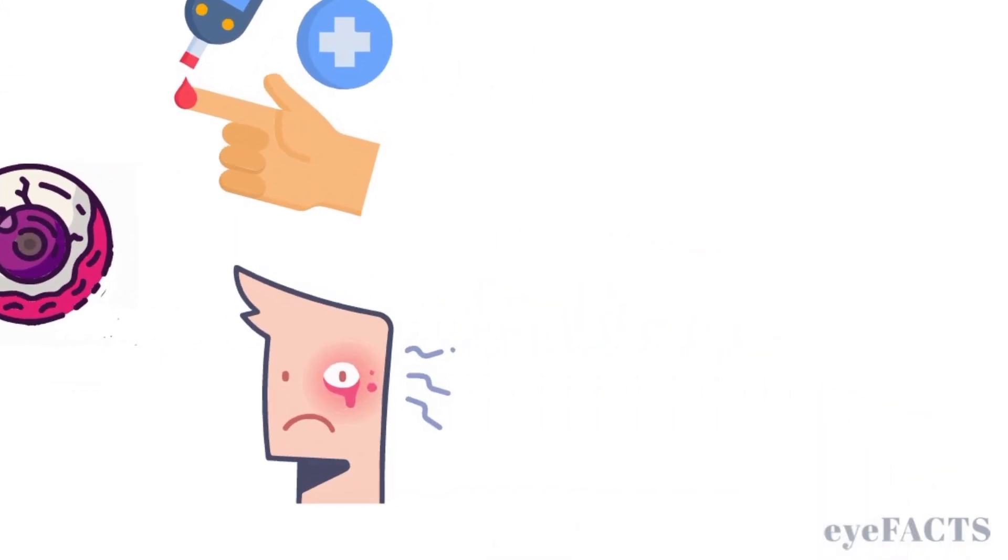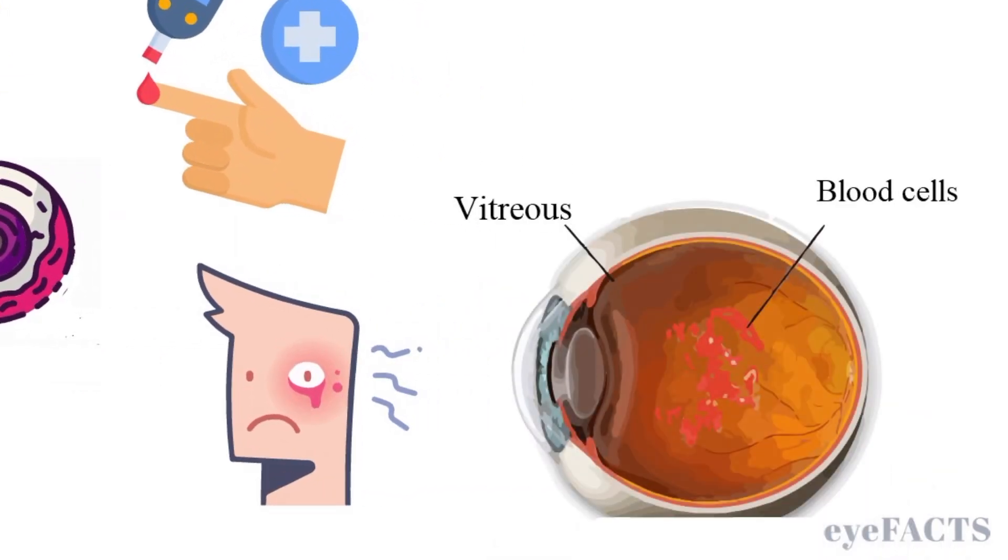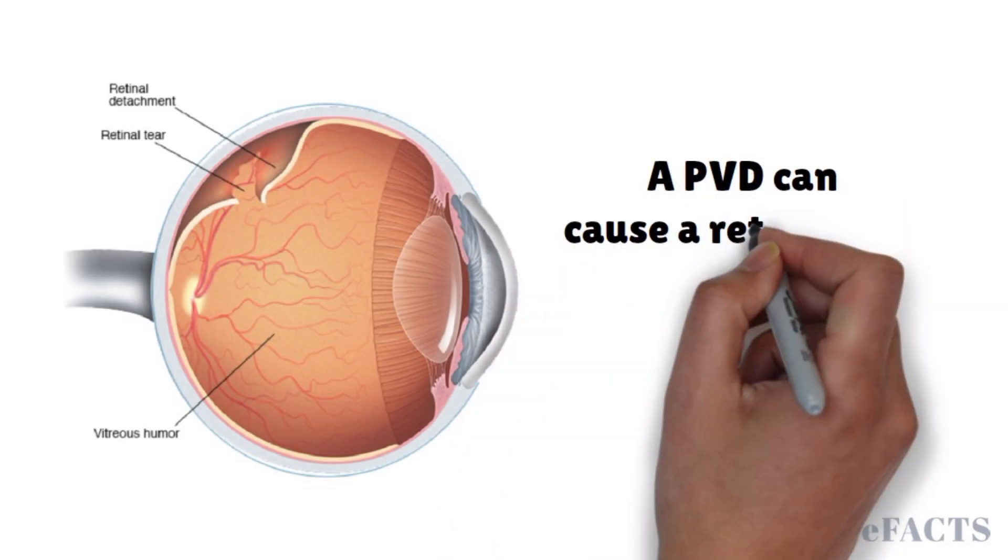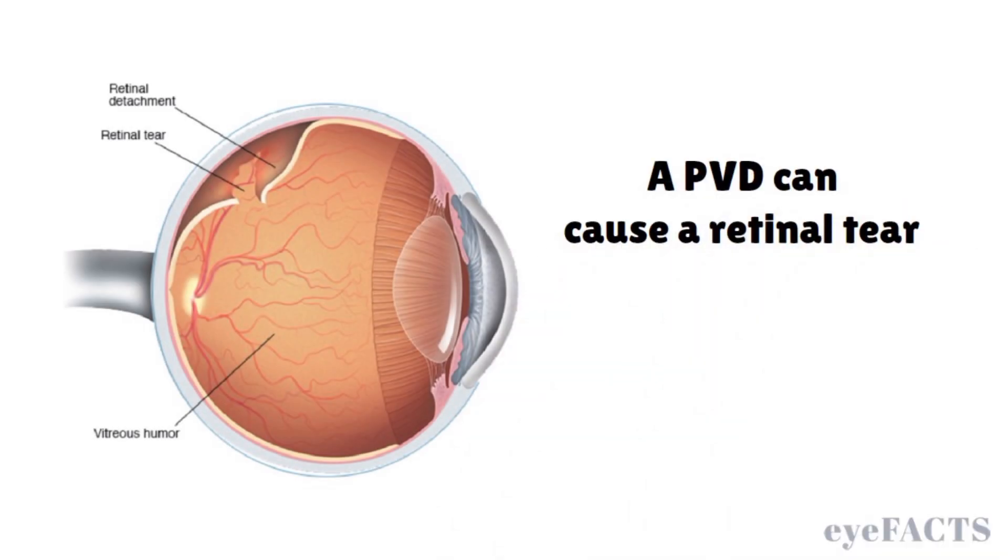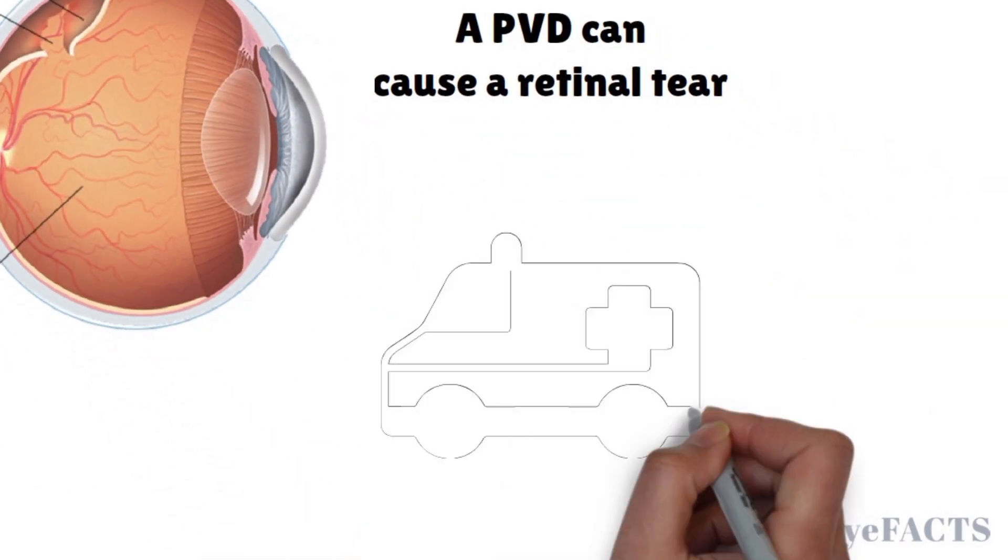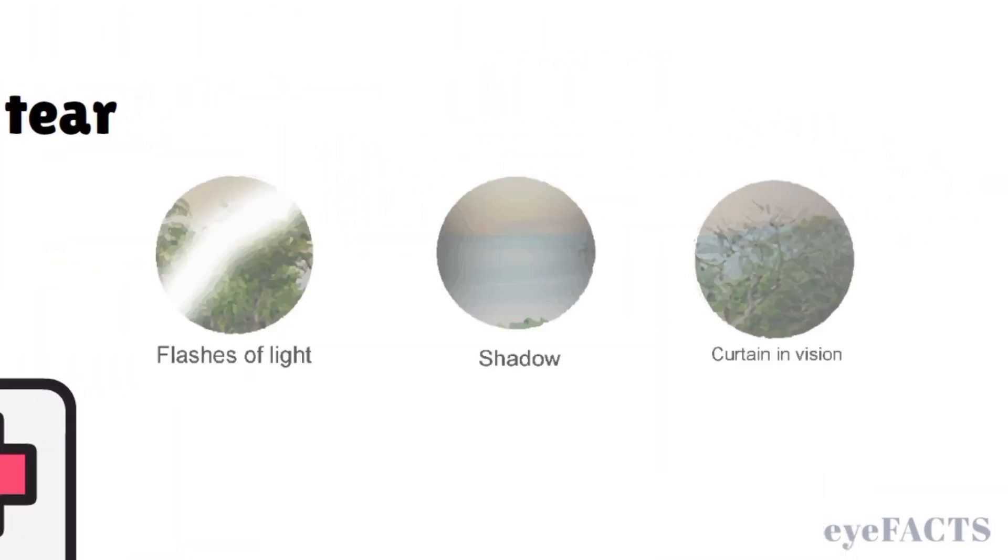More serious cases, such as retinal tears or detachments, can also lead to the sudden appearance of floaters. When the vitreous pulls too strongly on the retina during a PVD or as a result of other conditions, it can tear the retina and detach it from the back of the eye. This is considered a medical emergency and is often accompanied by flashes of light or a shadow or curtain in your vision.